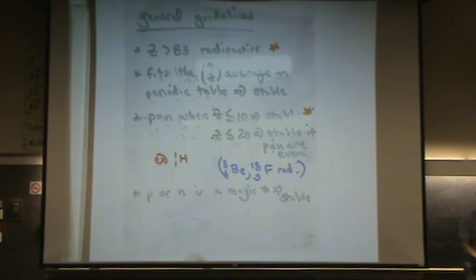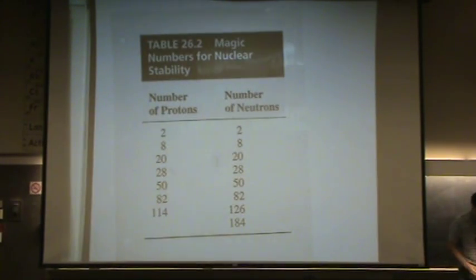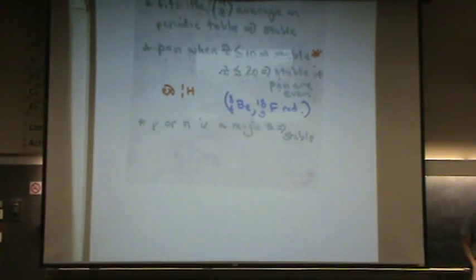Oh, an example where that wouldn't be true is helium-6. It's doubly magic. Because, oh no, there was another example I forgot where it was. But sometimes there's something that's double magic and not stable. Okay. The last one, the last one.